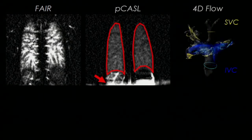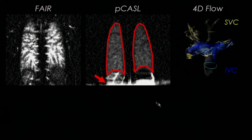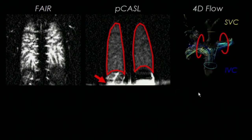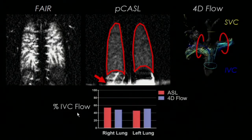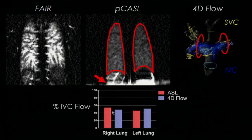To quantify this, we can draw ROIs over the lungs in PCASTLE and look at the ratio of the measured perfusion. In 4D flow, we can count the particles arriving through the RPA and the LPA that originated from the IVC. In this case, both ASL and 4D flow agreed that the IVC flow was pretty evenly split between the lungs.